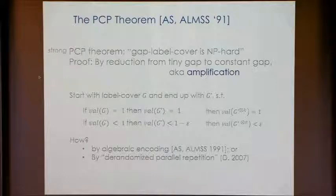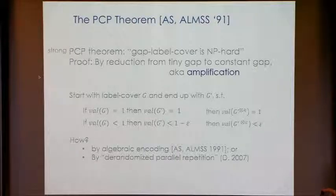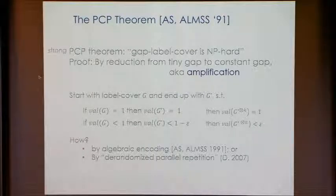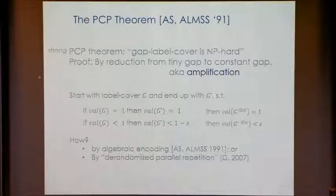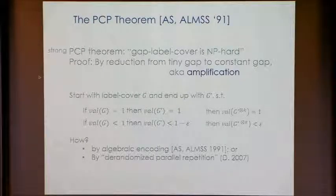How do you prove the gap amplification from a tiny gap to a constant gap? One way is through algebraic encoding — taking the variables of label cover and encoding them in a low-degree extension. Another way is combinatorial, essentially a de-randomized parallel repetition. It's very appealing to amplify a gap between yes and no instances by some kind of repetition: take the parallel repetition, the gap grows a little bit, take it again, it grows more.